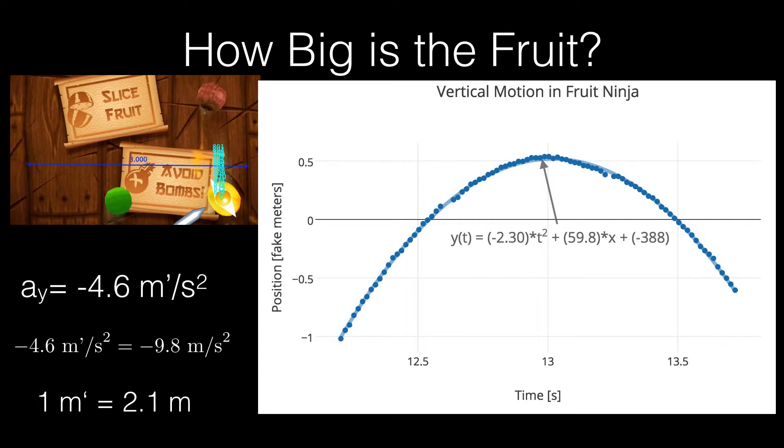Now I can just do a conversion. If I say I know it should be on Earth, and on Earth the acceleration should be negative 9.8 meters per second squared, I can solve for the connection between the meter prime and a meter. And I get one meter prime, or the width of that board is 2.1 meters.